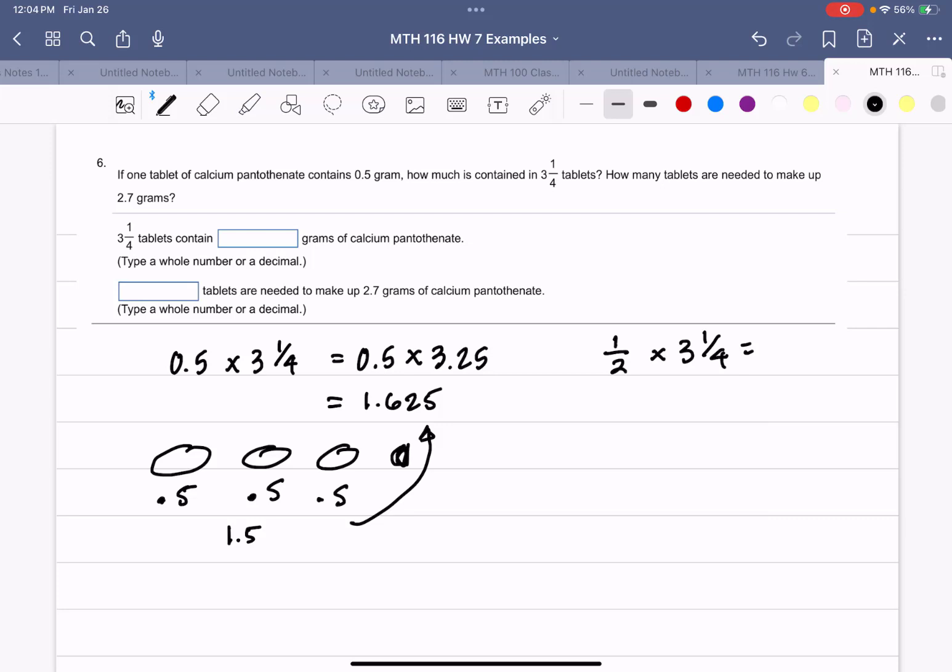Now, how many tablets would a person need to take to have 2.7 grams of calcium? So in this case, we've got the total 2.7. We've got to divide that by the 0.5 to figure out how many tablets the person would need. So this time they would need to take 5.4 tablets.